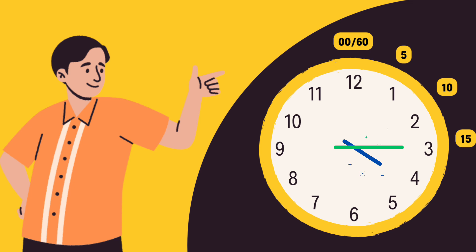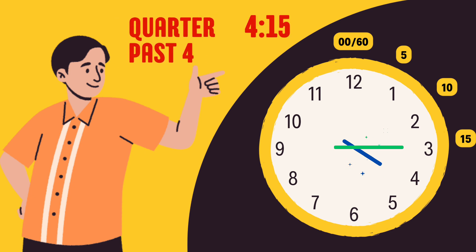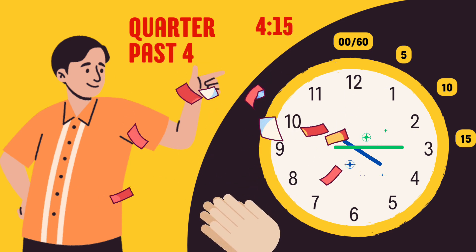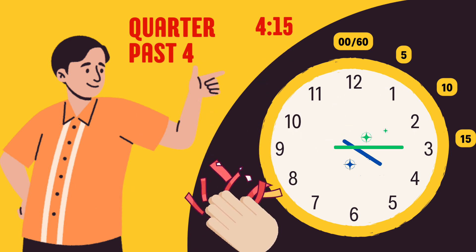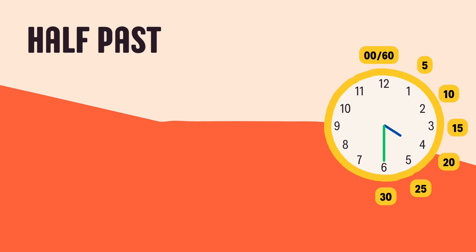Now your turn — if the hour hand is on four and the minute hand is on three, what's the time? The time is quarter past four. Well done, you're doing an amazing job!